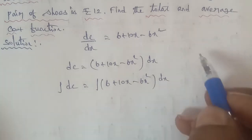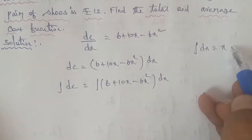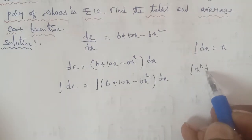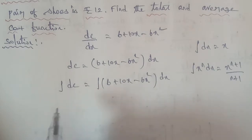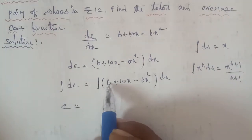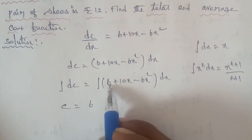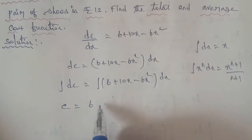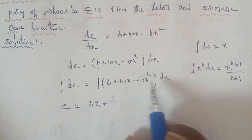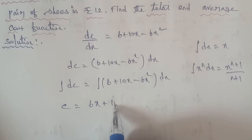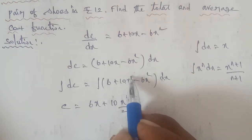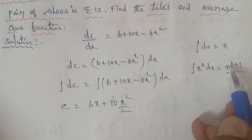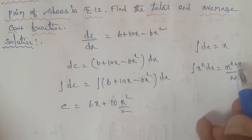Now, integration of DC gives C. We use the standard formula for integration of X power N DX, which is X power N plus 1 by N plus 1. Applying this formula: integration of 6 DX gives 6X. Integration of 10X DX — here the constant is 10, and integration of X DX is X square by 2, so applying the formula X power 1 plus 1 by 1 plus 1 gives X square by 2.